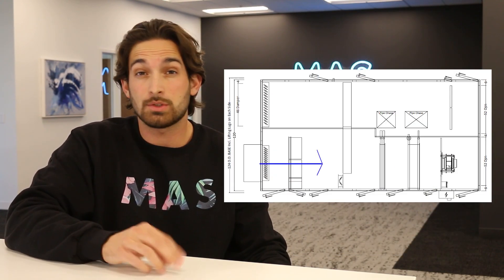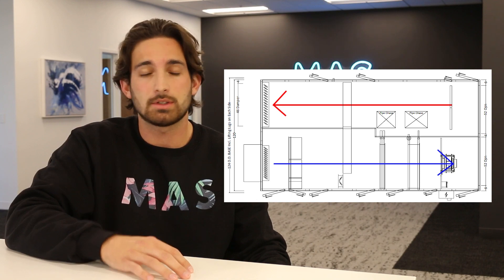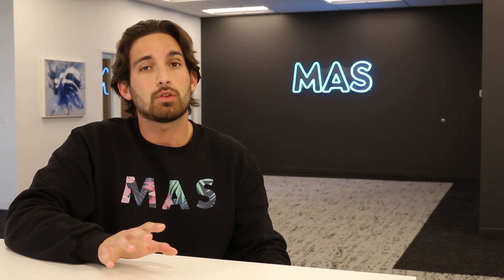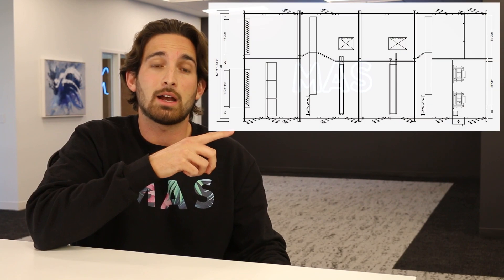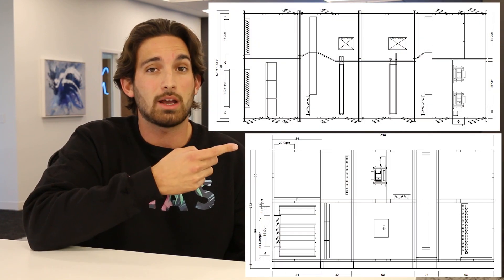Now moving on to heat recovery heat pipes, these devices use two air streams to recover energy similar to what you would see for wheels or plates. We can offer a few different layouts. We can do side-by-side layouts or we can do stack layouts.